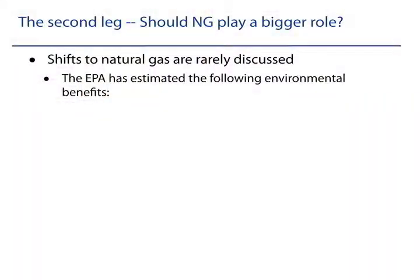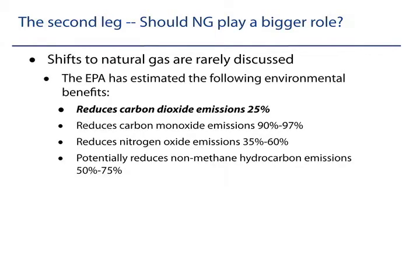The transportation sector accounts for over 30% of greenhouse gases within the U.S., and insofar as we care about reducing our dependency on foreign oil or just oil in general, it accounts for over 60% of our use of oil. In 1980, only 20% of the vehicles we bought were trucks, but by 2004 it was over 60%. If we shifted from gasoline to natural gas, we would reduce carbon dioxide emissions by about 25%, along with many other co-benefits from criteria pollutants.